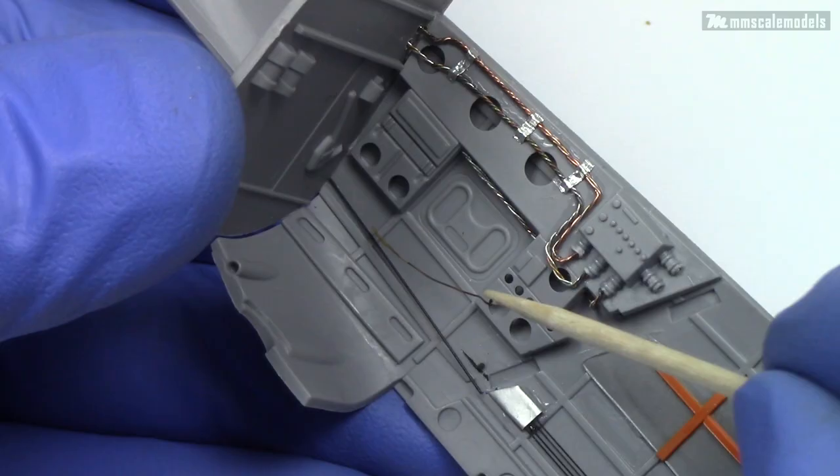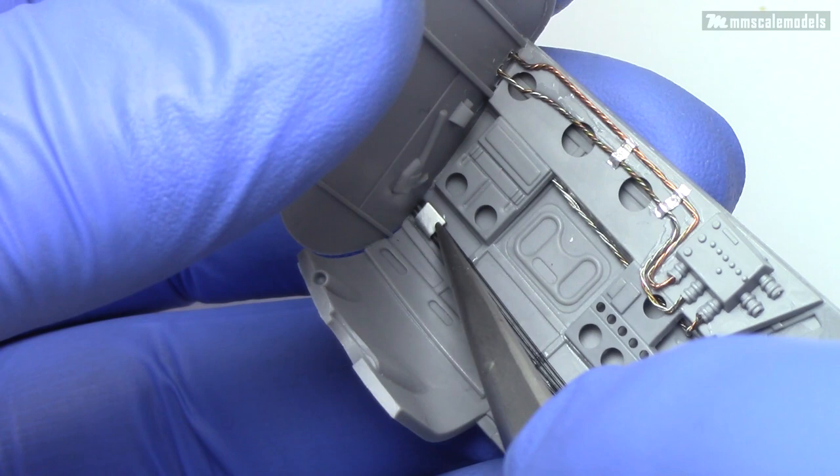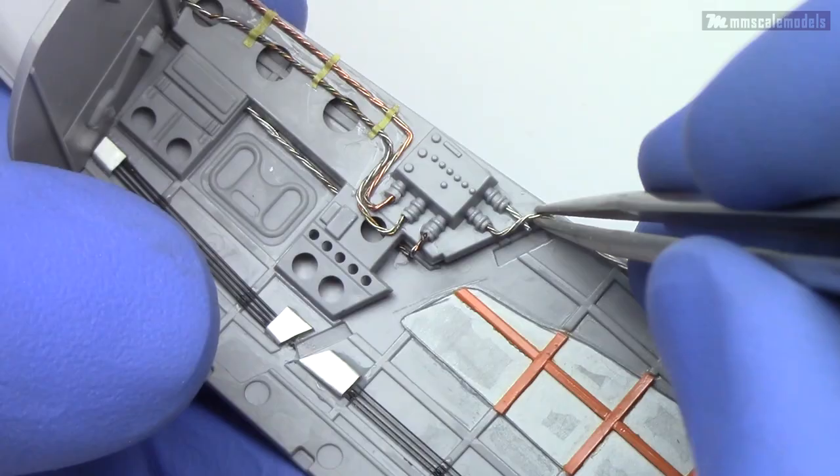And while we are on the subject, I did continue the control cables in the gunner's compartment. Now we have much more compelling picture. After a couple of very short wire looms going in the front bulkhead, let's turn our attention to the rear bulkhead.